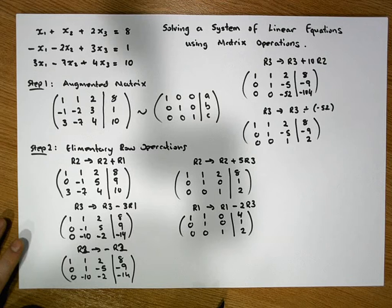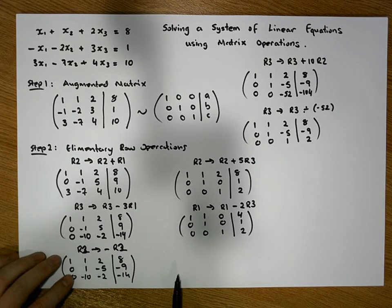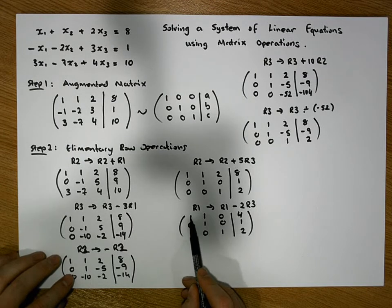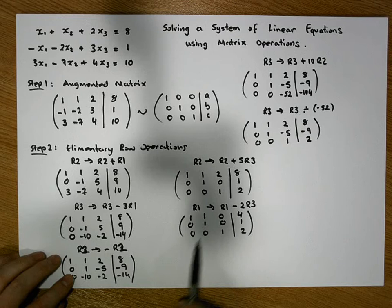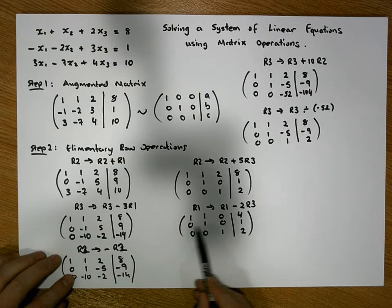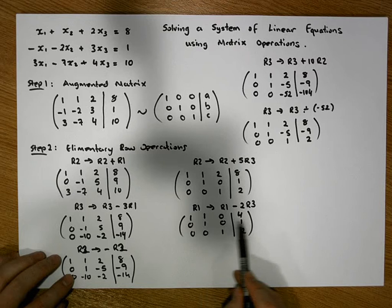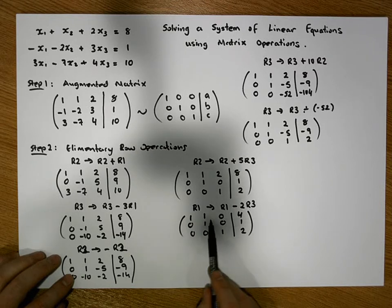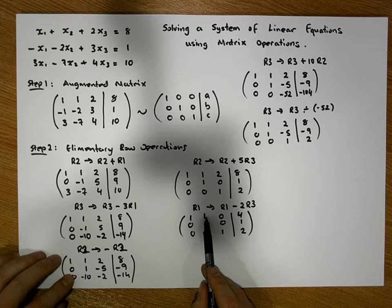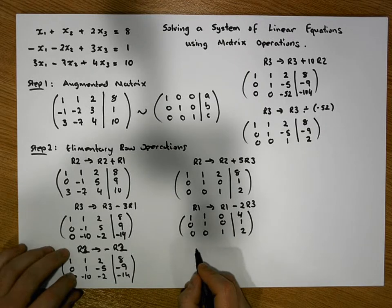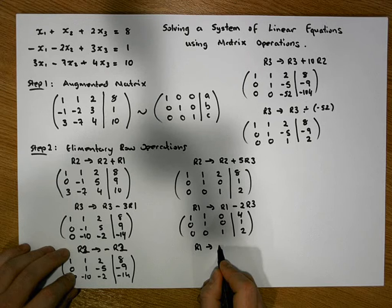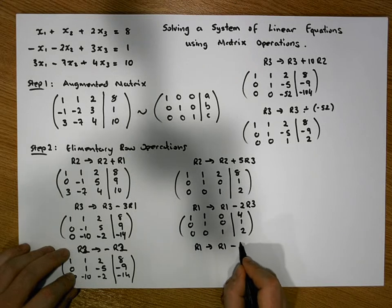So we're nearly there. The last operation we're going to do is to change the second entry in row 1 into a 0. And you'll probably see that if we add minus 1 times row 2 to row 1, that will have an effect of changing this to a 0. It won't affect any one of the entries on that row. So what we're going to say is that row 1 becomes row 1 minus row 2.